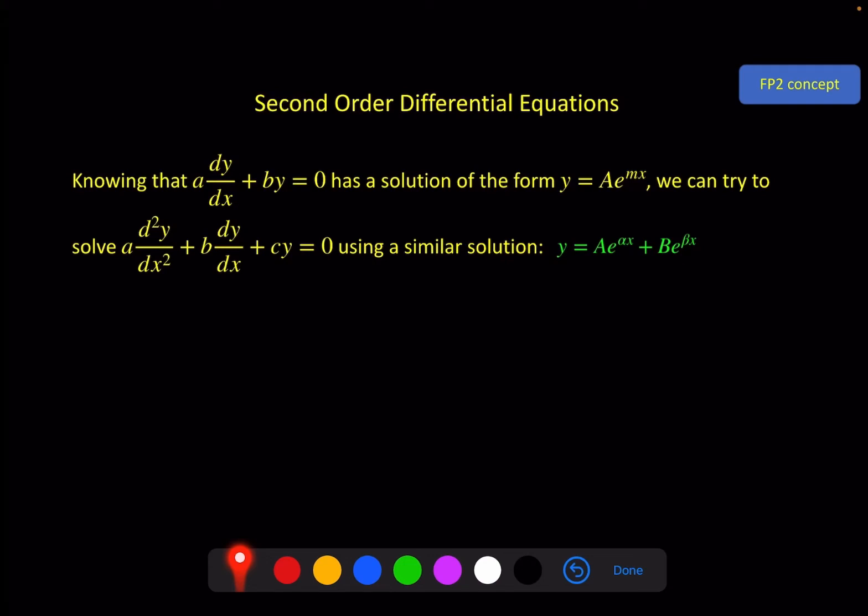So to see how this works, I'm just going to plug this in. We've got y equals this. I need to find the derivative and the second derivative, put it in and see if we can get something that might equal zero. So let's start with the first derivative. And that will be a α e^(αx) + b β e^(βx).